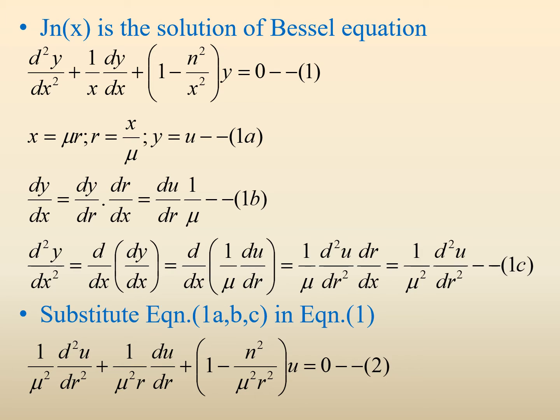Jn(x) is the solution of the Bessel equation. The Bessel differential equation is d²y/dx² + (1/x)(dy/dx) + (1 − n²/x²)y = 0.